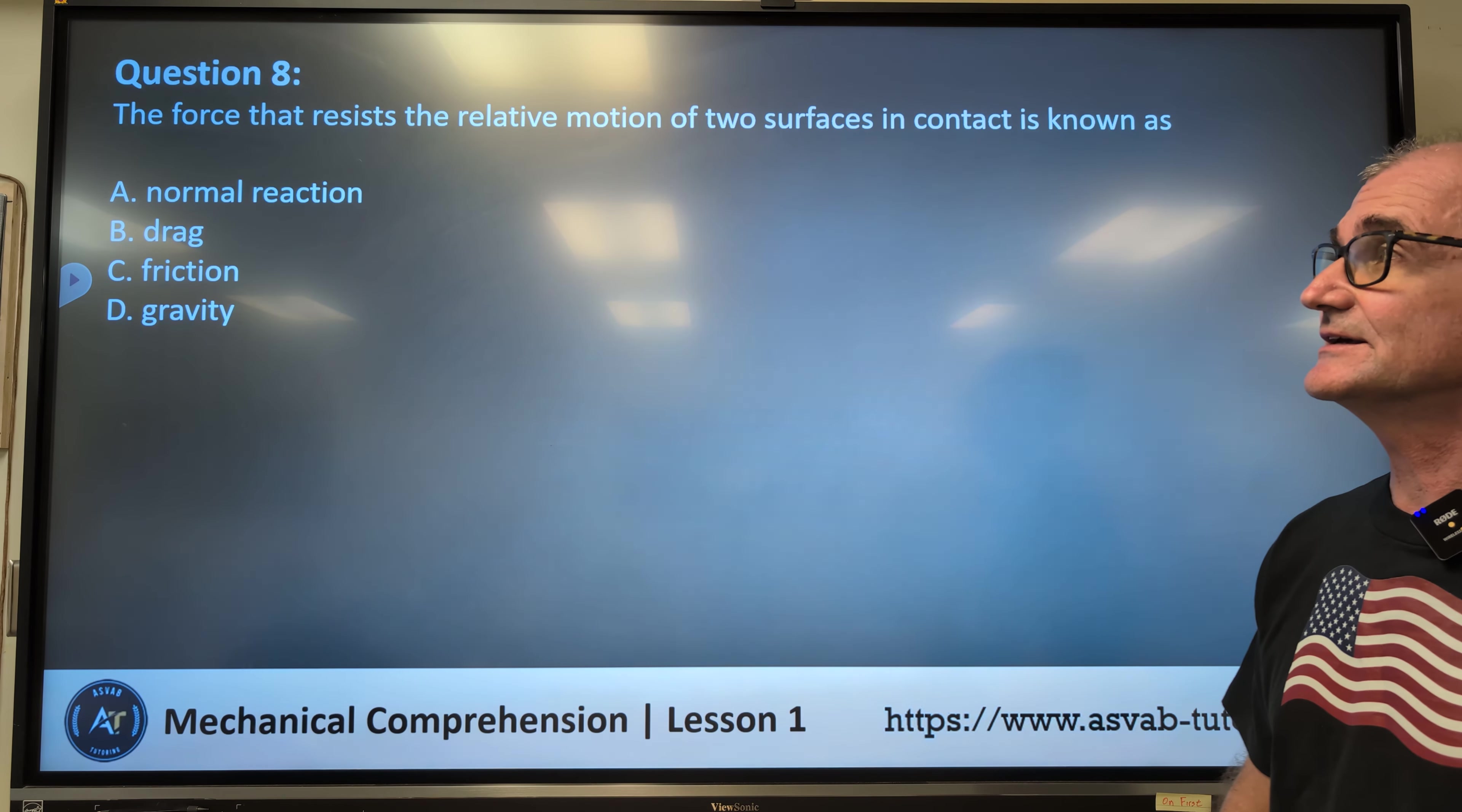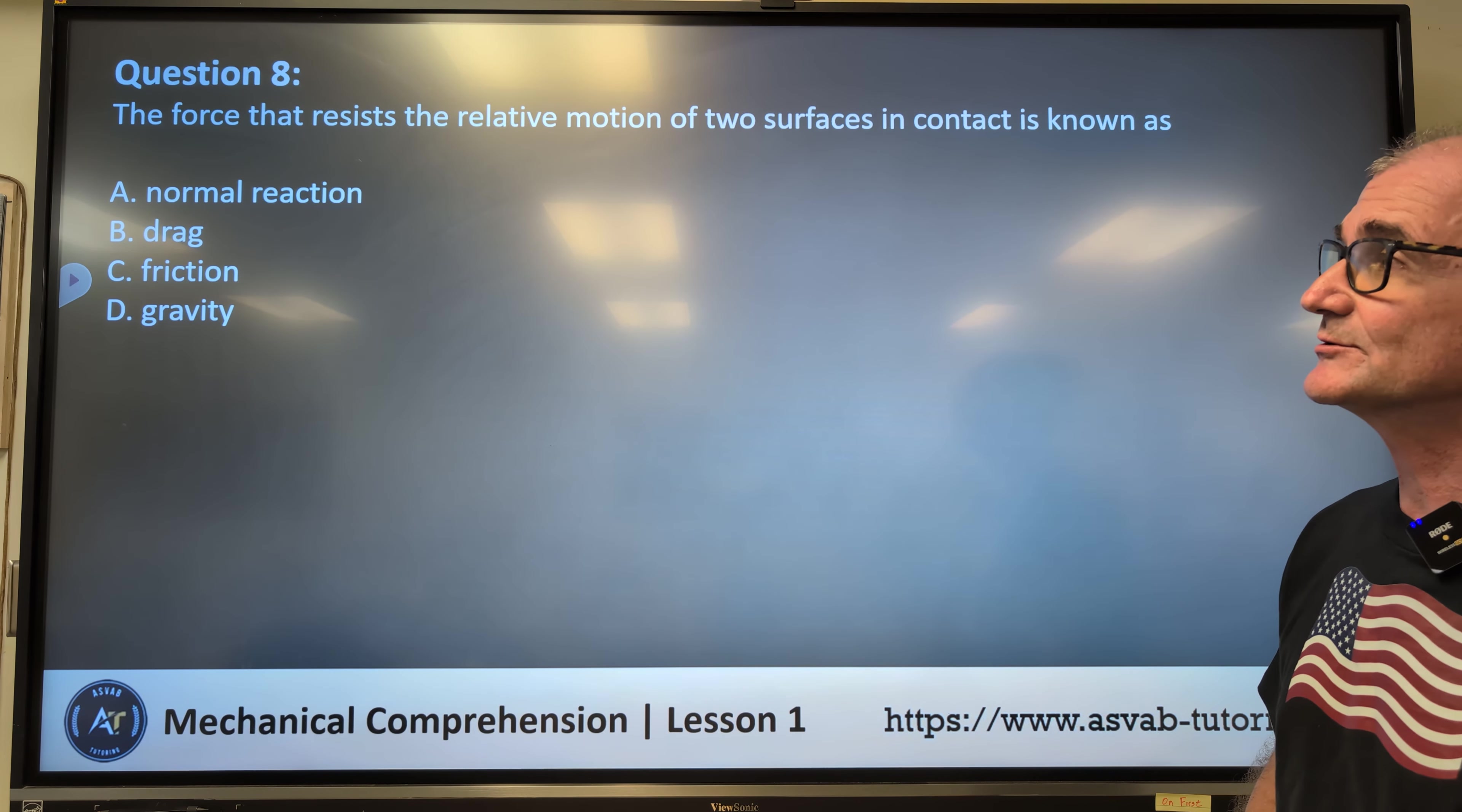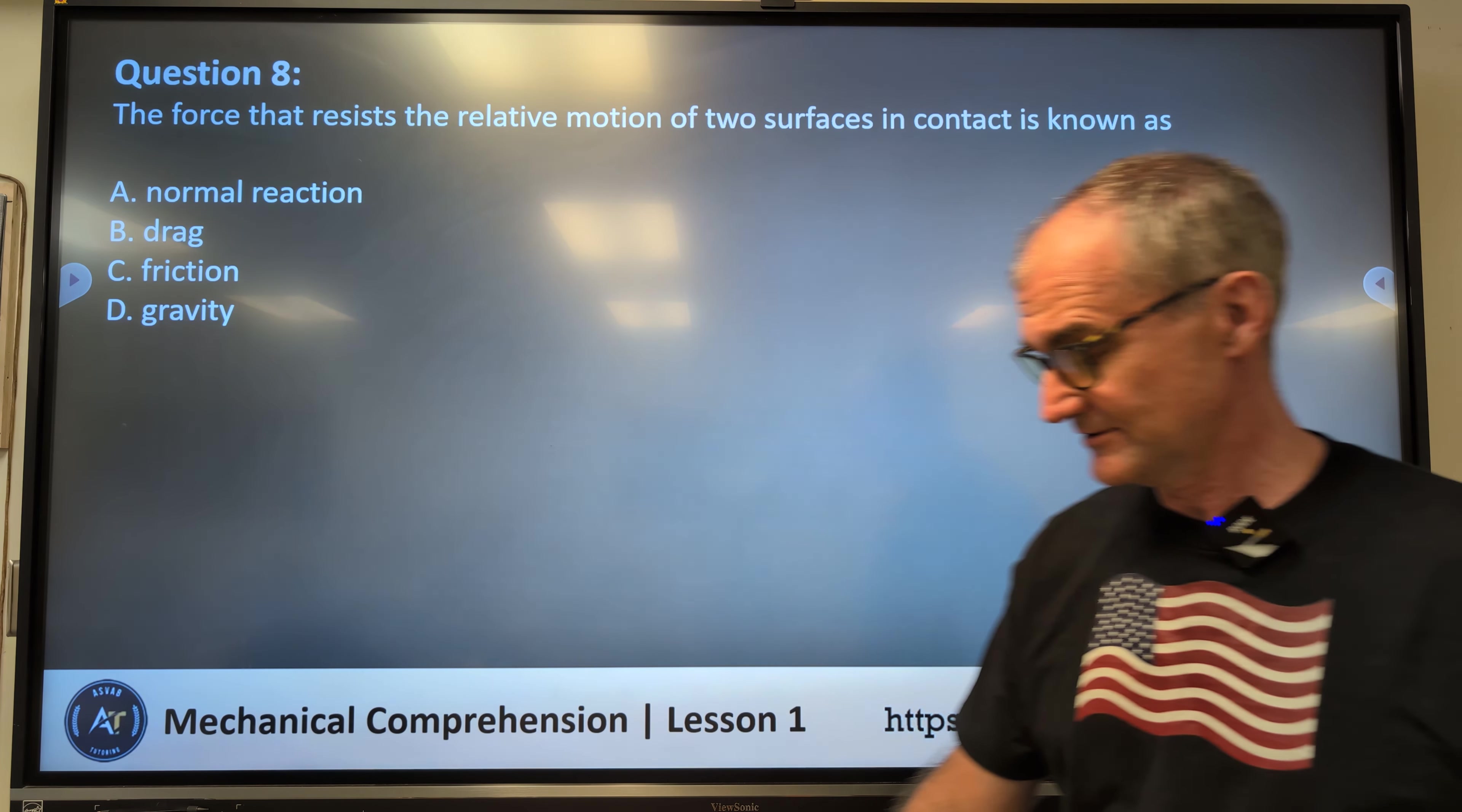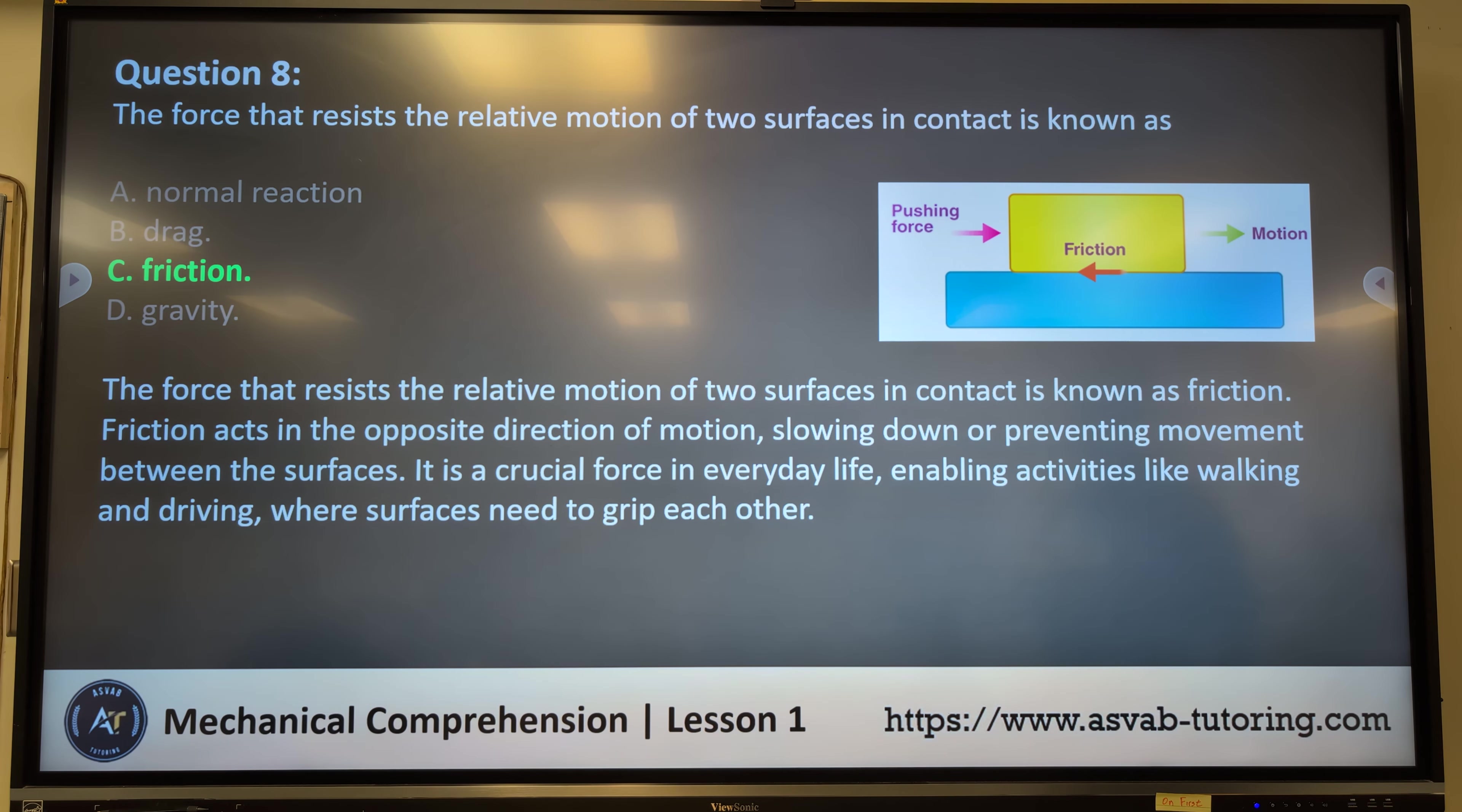Question number eight. The force that resists the relative motion of two surfaces in contact is known as: A, normal reaction, B, drag, C, friction, or D, gravity. The correct answer is C, friction. The force that resists relative motion of two surfaces in contact is known as friction.